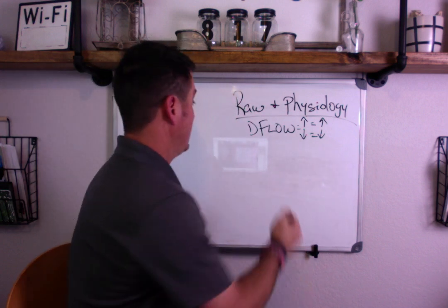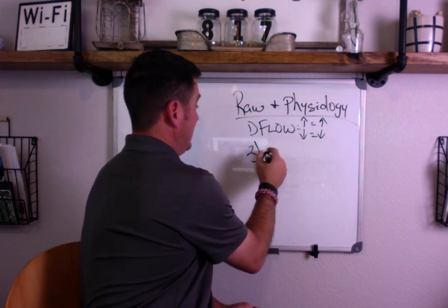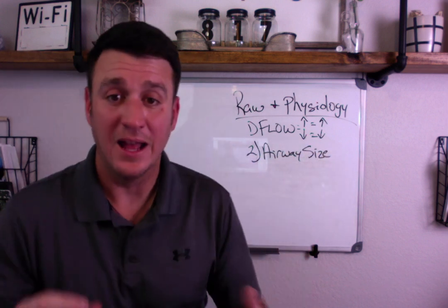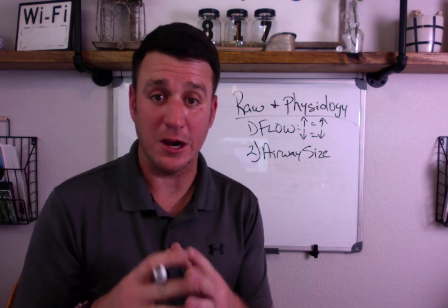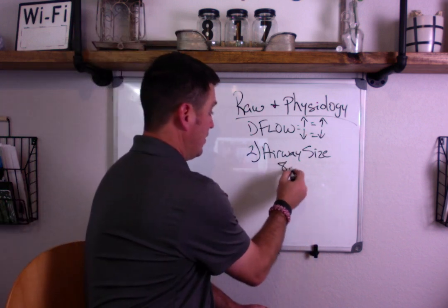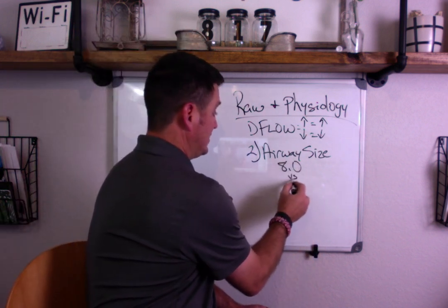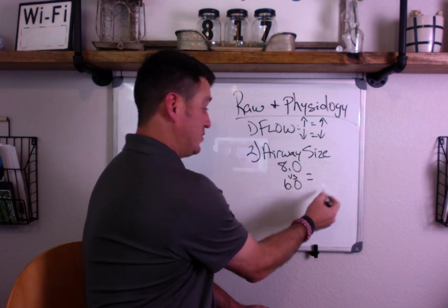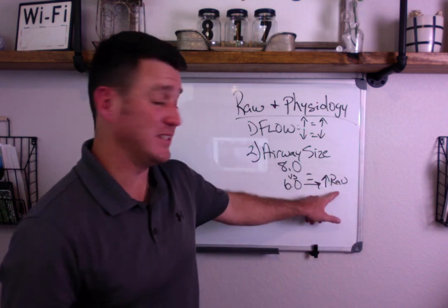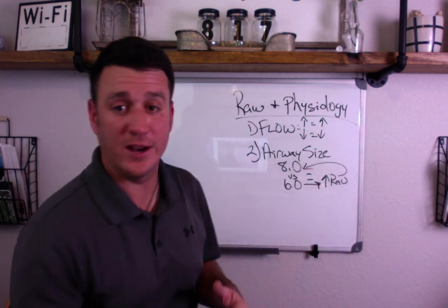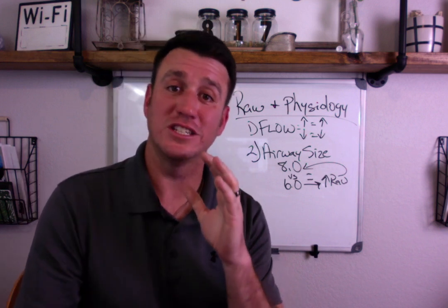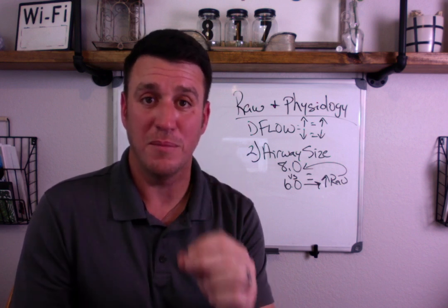The second thing we need to talk about is airway size — the diameter of your airway, especially in a mechanically ventilated patient. This should make sense: an 8.0 versus a 6.0 endotracheal tube — the 6.0 will have a higher airway resistance than the 8.0. Why? Because it's a smaller diameter. So size of tube matters.